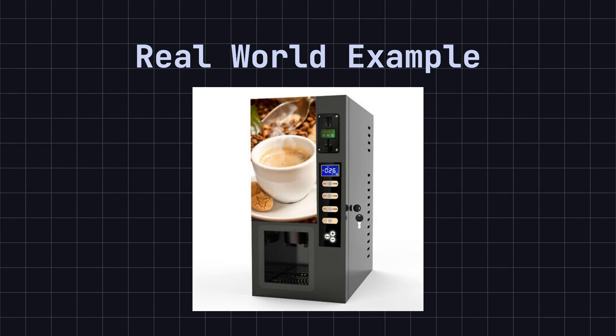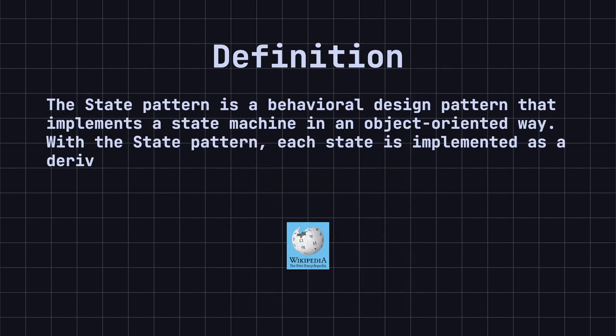After the coffee is ready, it moves to a completed state, waiting for you to collect your coffee. In each state, the coffee machine behaves differently. The state pattern is like this coffee machine, managing an object's different states to change its behavior accordingly.